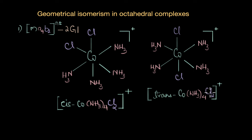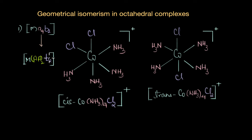In MA₄B₂, there is one cis and one trans isomer. In the cis isomer, the chloride ligands are adjacent to each other, and in the trans isomer they are opposite to each other. Now, ammonia is a monodentate ligand, but what if we replace the 'a' ligand with a bidentate ligand? In that case we would need two such ligands to satisfy coordination number six.